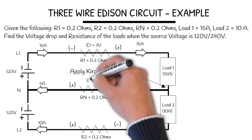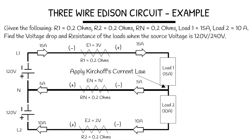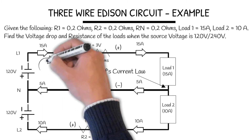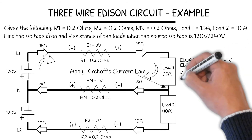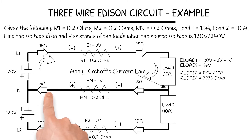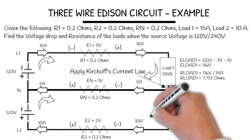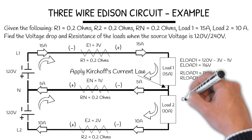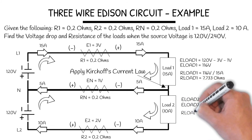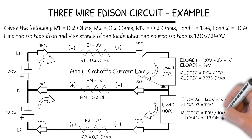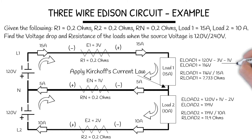Next, we find the volt drop of each resistor. To find the load volt drops, we evaluate each individual loop. For load one: 120 volts minus 3 volts minus 1 volt gives us 116 volts, and load resistance is 7.733 ohms. For the bottom loop, load two: 120 volts plus 1 volt minus 2 volts gives us 119 volts, and load two resistance is 11.9 ohms. Again, the neutral conductor's polarity determines whether we subtract or add the 1 volt.